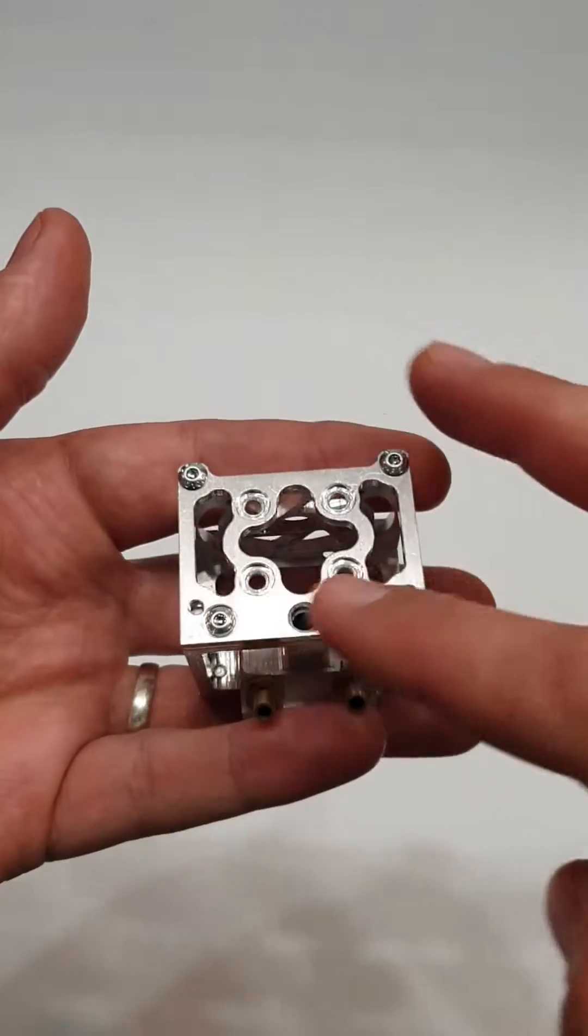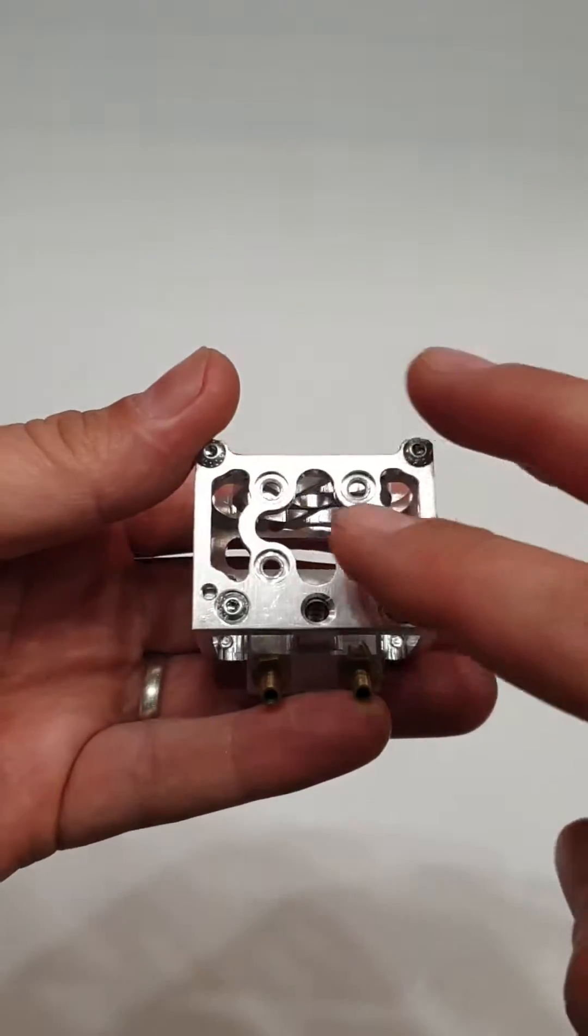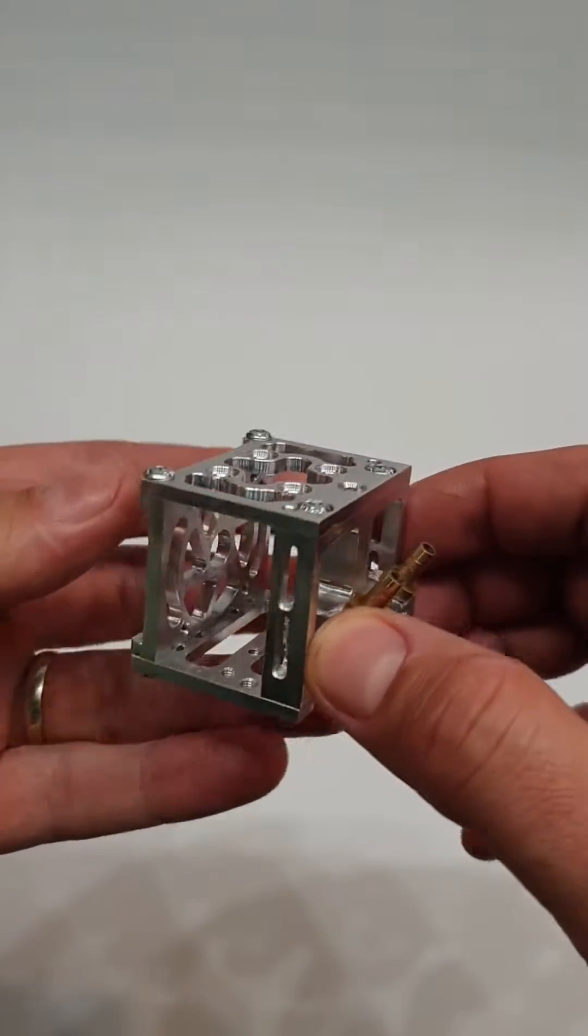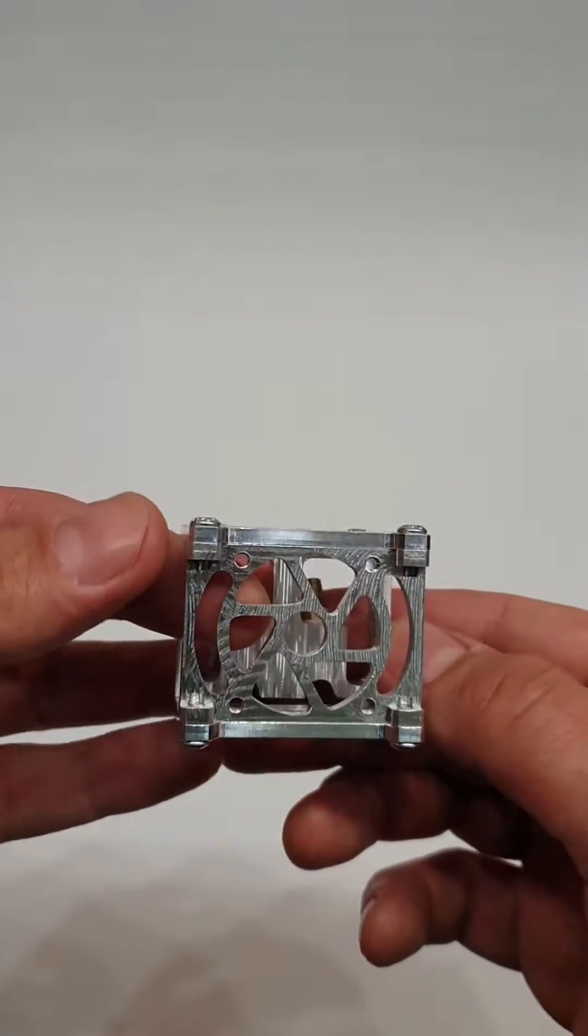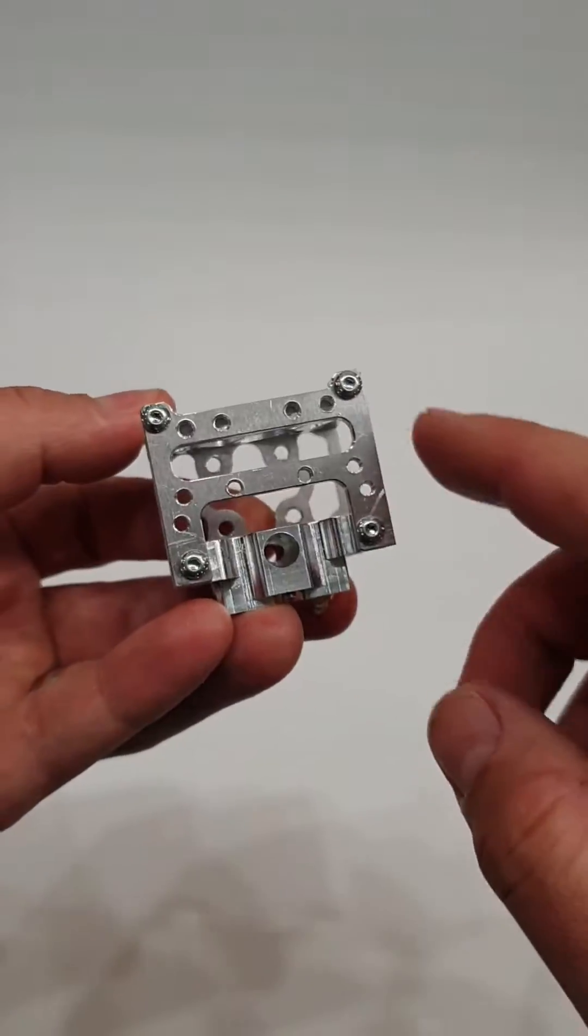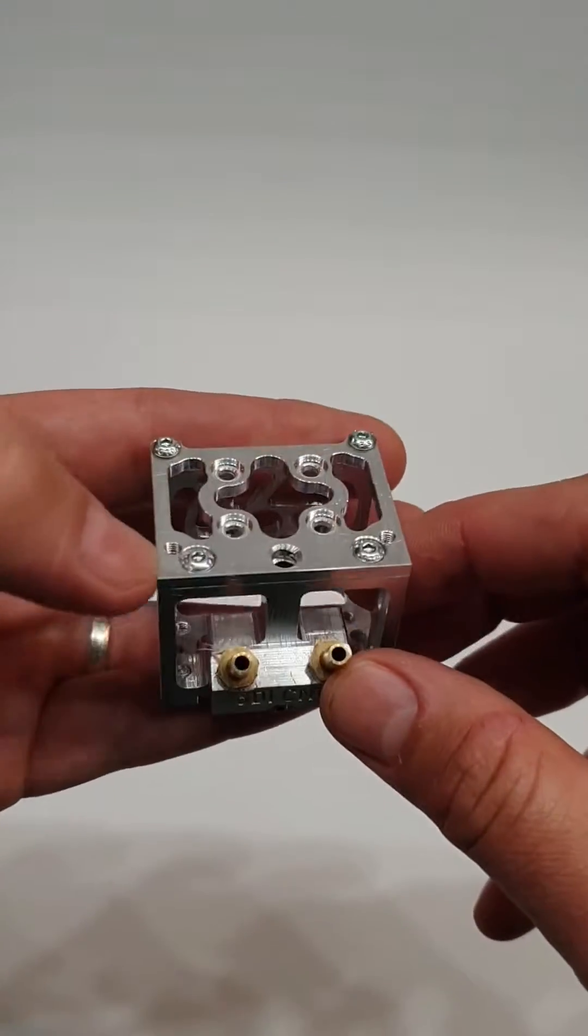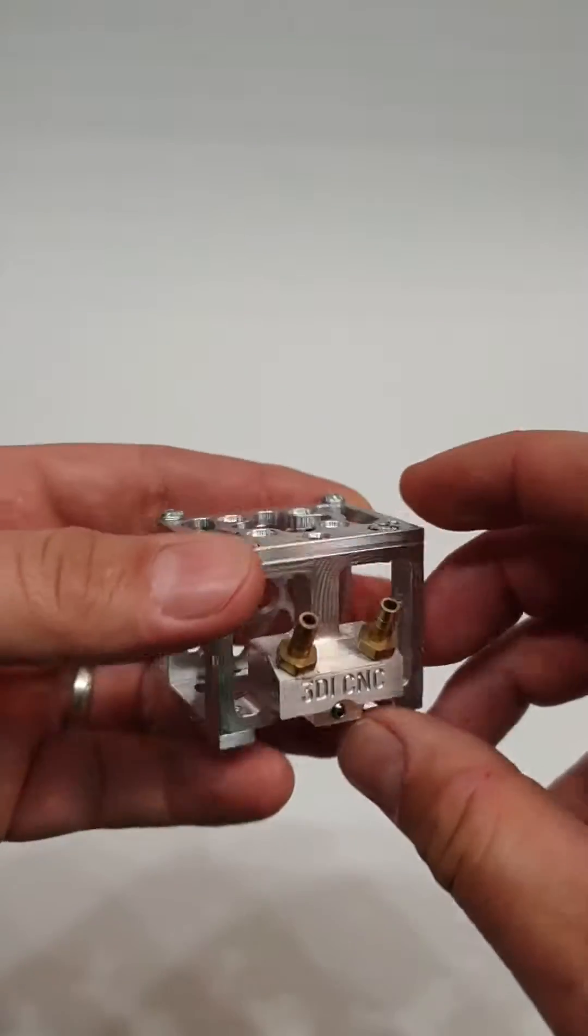That's the front, a top side which is going to be mounted on the MGN9 linear rail. That's the back side. We have some extra mounting holes which are threaded for M3 nuts.